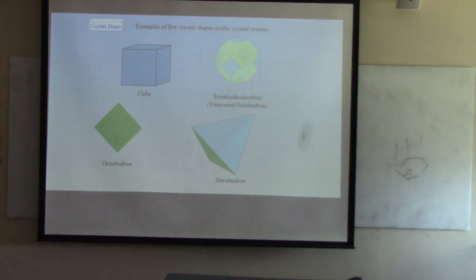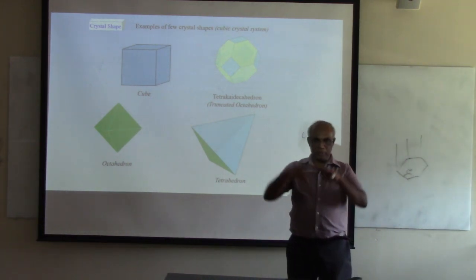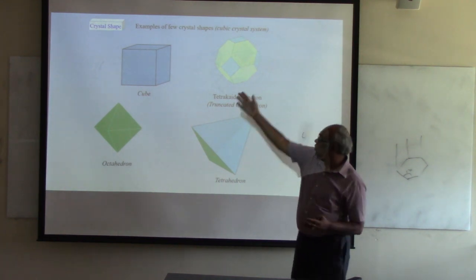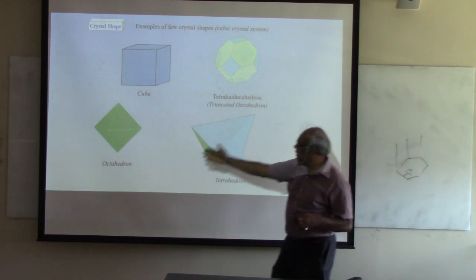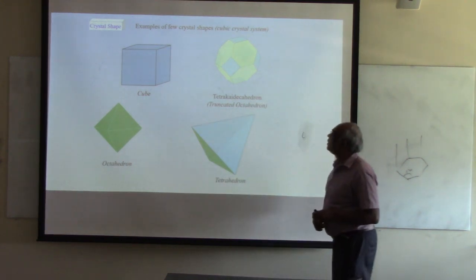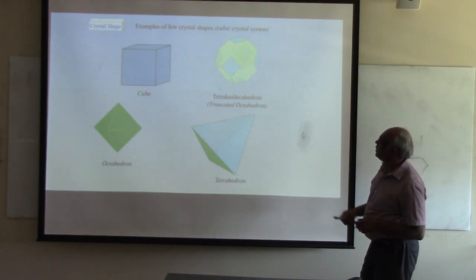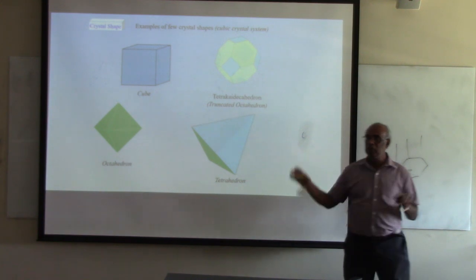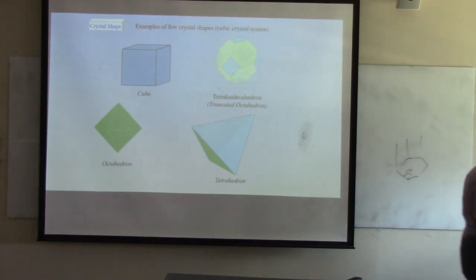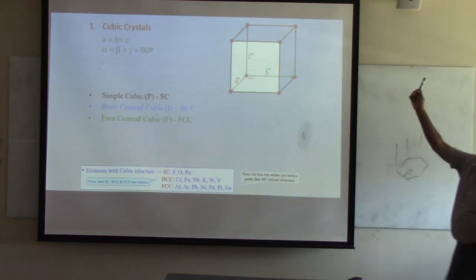Crystal shapes are also important. At a macroscopic scale, you can have cubic crystals, or octahedral, or tetrakaidecahedron shapes — there are different crystal shapes, and that's something to remember. Now let me go through cubic crystals quickly, one by one.